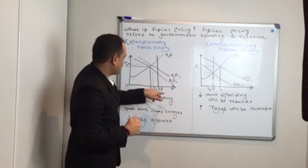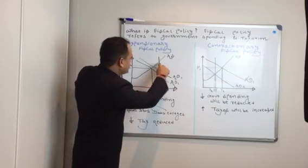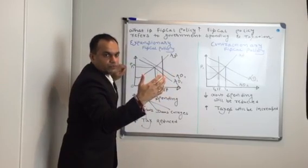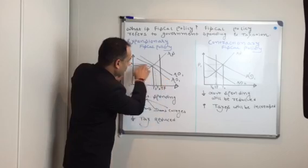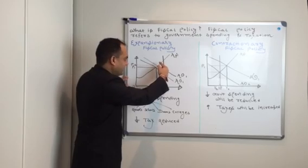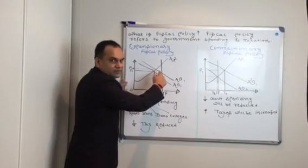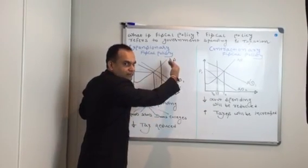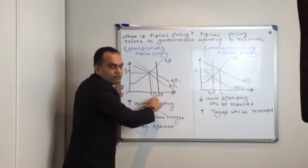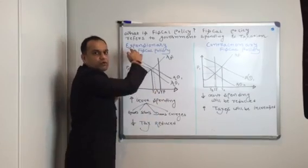This is our AD-AS curve — aggregate supply and aggregate demand. This is our real GDP. This is the original price level and this is the original GDP. This is the full employment scenario that can be achieved if your fiscal policy is sorted. This is the aggregate demand curve originally and this is the aggregate supply curve. What the government would do is increase spending and reduce tax, which would increase aggregate demand and shift the aggregate demand curve to its right. Since the aggregate demand curve shifts right, the original GDP Y1 would also shift to Y2 — this is the new GDP.